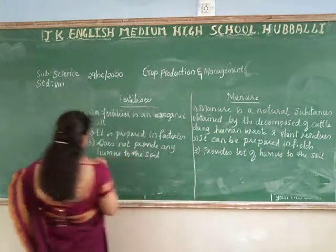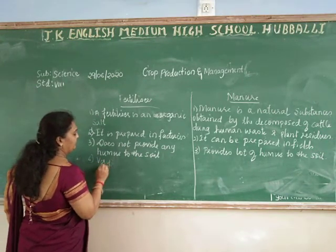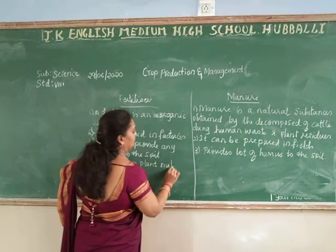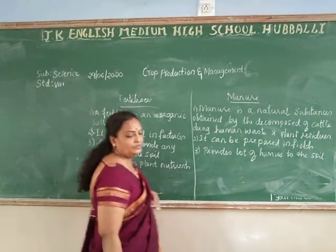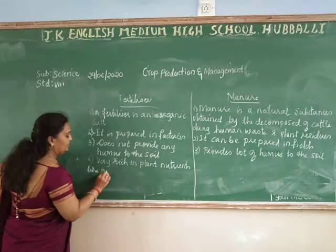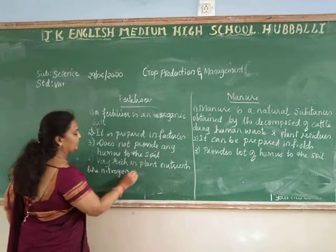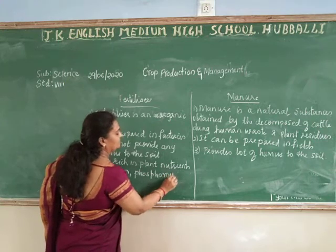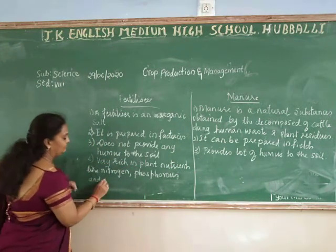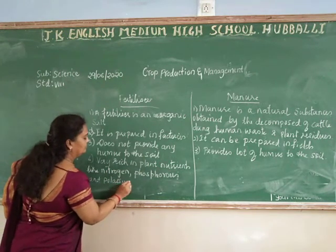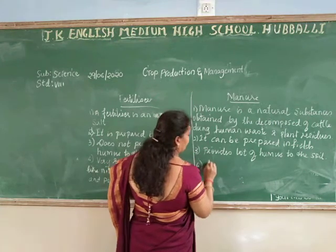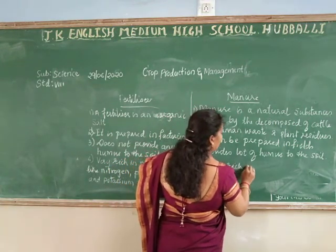Fourth: fertilizers are very rich in plant nutrients like nitrogen, phosphorus, and potassium. Manure is relatively less rich in plant nutrients.